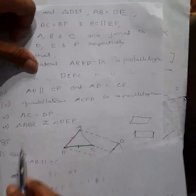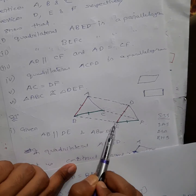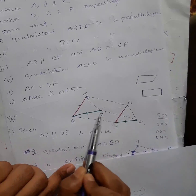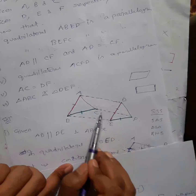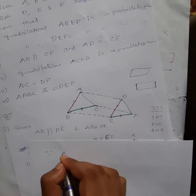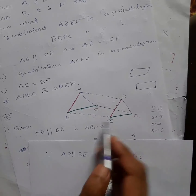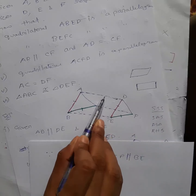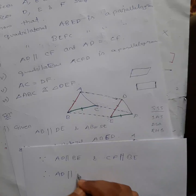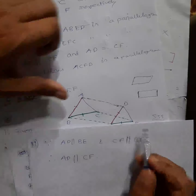For part three, show AD is parallel to CF. This is much simpler. We have already shown AD is parallel to BE (from ABED being a parallelogram), and CF is parallel to BE (from BEFC being a parallelogram). Since AD is parallel to BE and CF is parallel to BE, AD must be parallel to CF. Therefore AD is parallel to CF.